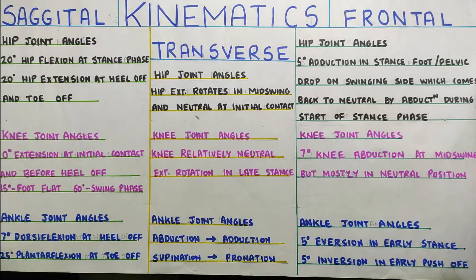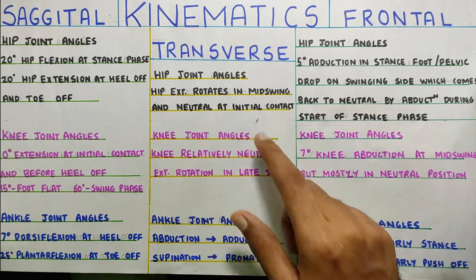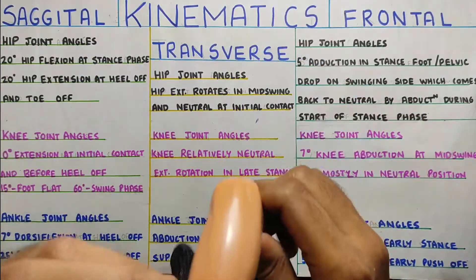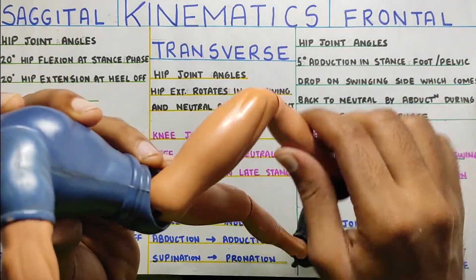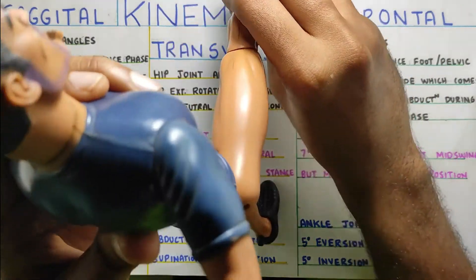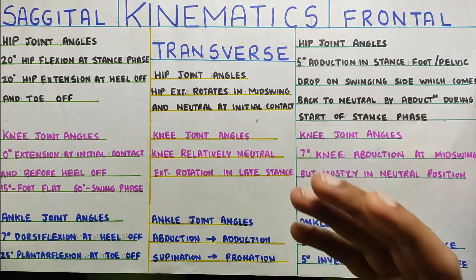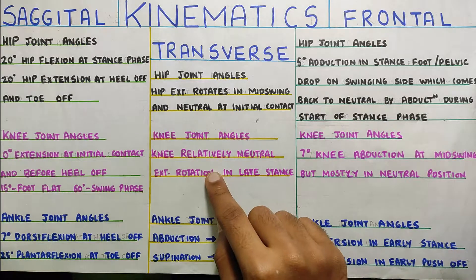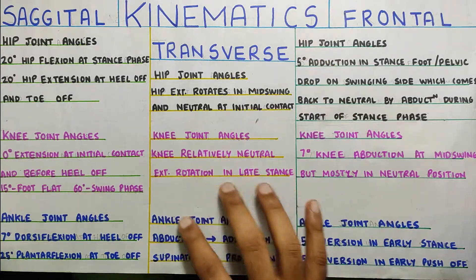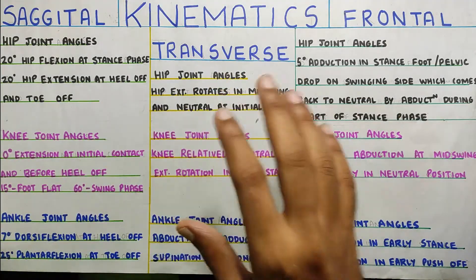Now moving to the transverse plane, the last one. At the hip joint, the hip goes into external rotation in mid-swing. Then it comes back to neutral at the initial contact — so when you are swinging the leg there is a slight amount of hip external rotation, and as you step and make initial contact, it returns to neutral. The knee joint is relatively neutral with only a slight amount of external rotation in late stance. At the ankle, there is slight abduction/adduction and supination/pronation seen from the transverse plane. Those are the ranges seen in the kinematics of the sagittal, frontal, and transverse planes.